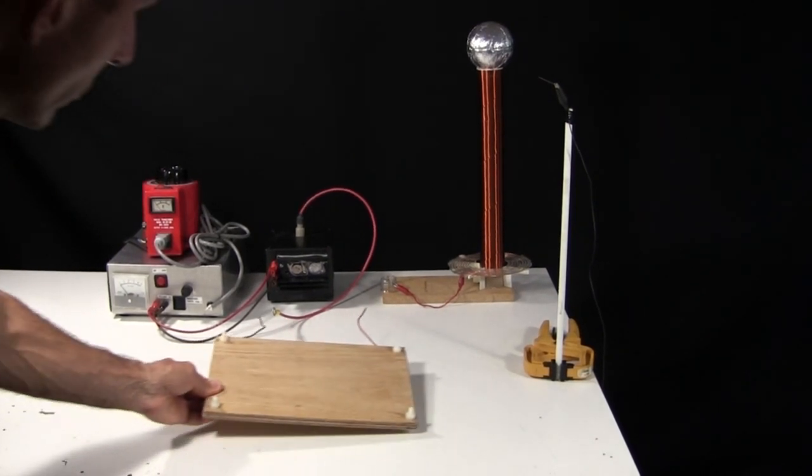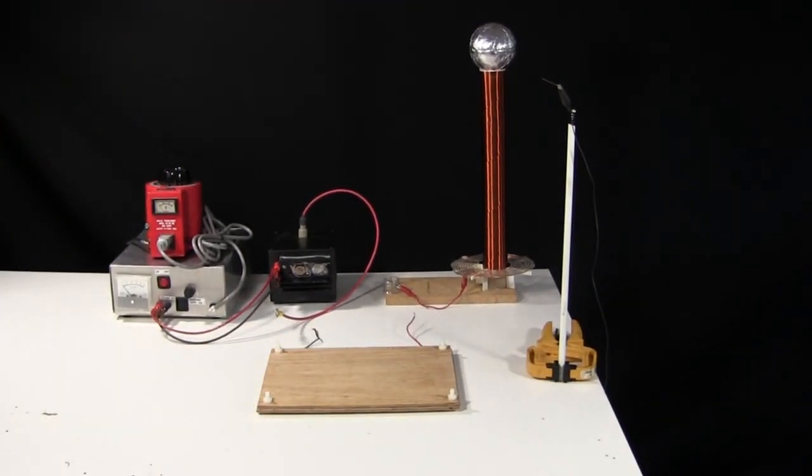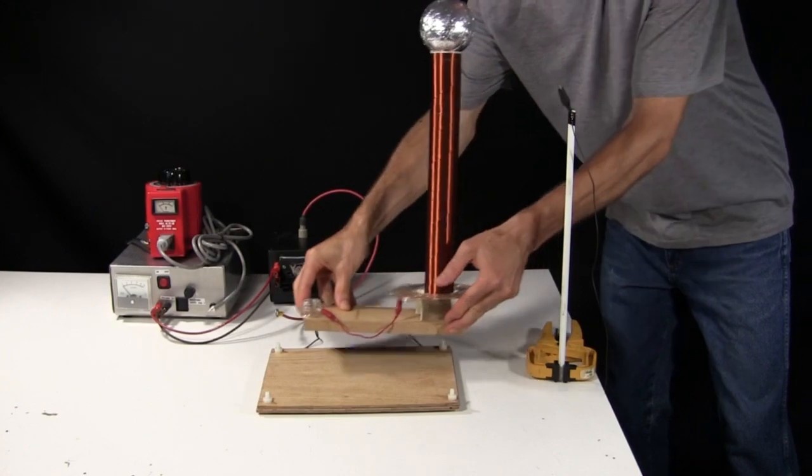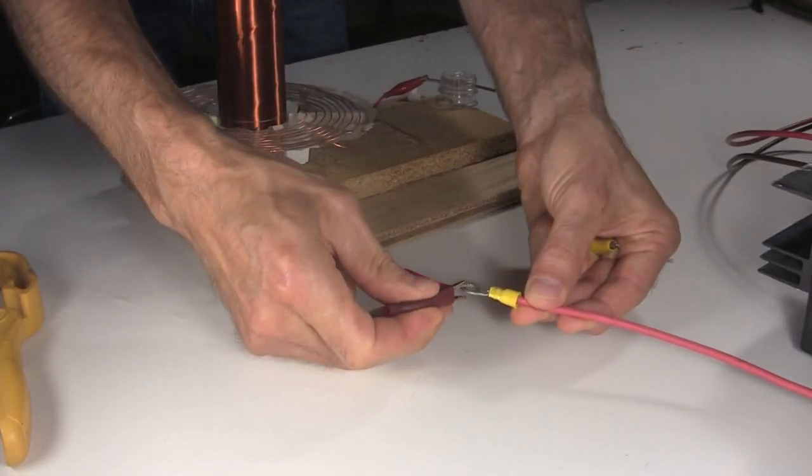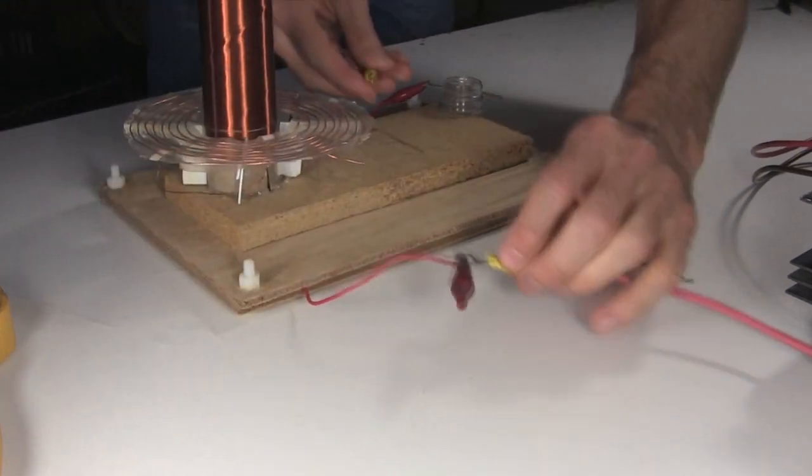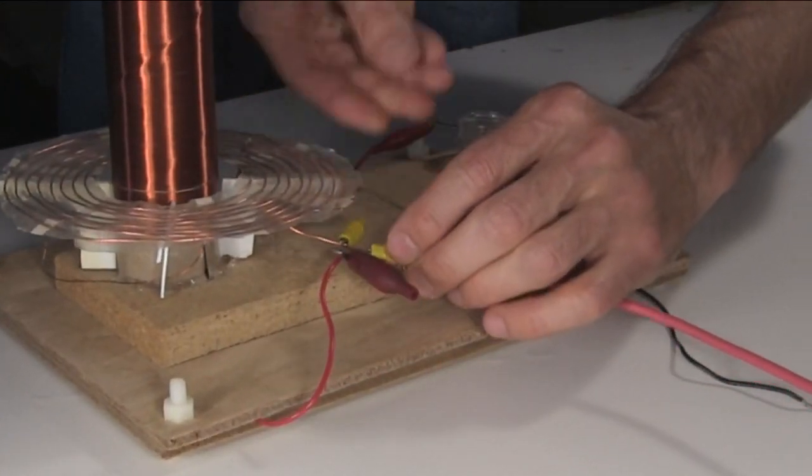Time to try it with my small spark gap Tesla coil. First comes the capacitor, and then the Tesla coil on top of that. From the rear, I connect the power supply positive to the red wire of the capacitor, and also to the inner spiral of the primary coil.